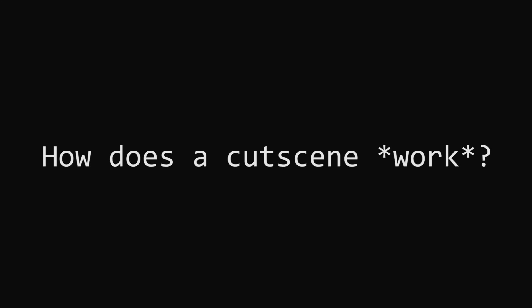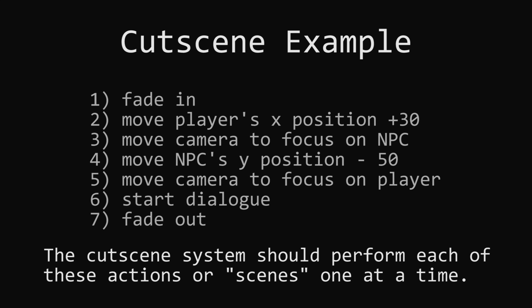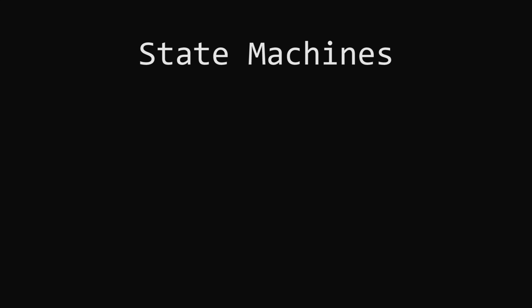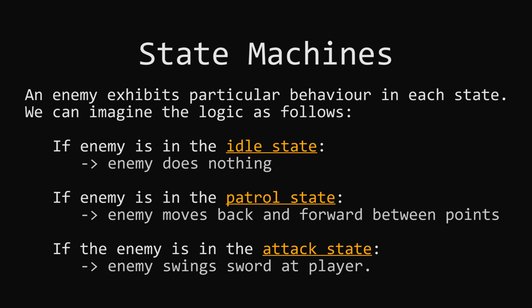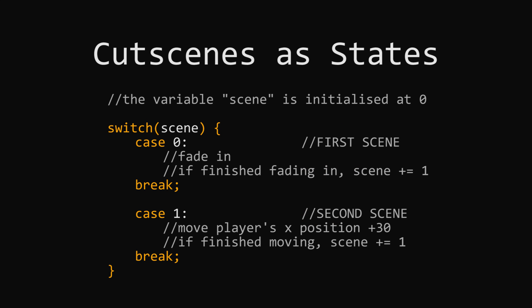We need to consider how the cutscene system is going to work. Cutscenes are a sequence of scripted events, meaning we have a bunch of actions we want to perform in a set order. We want to start at the first action and work our way down, performing each until they're finished. We can think of cutscenes like state machines for object states — just like an enemy object can be in states like idle, patrolling, and attacking, we can have our cutscenes performing in a similar way, though instead of states we might call them scenes. We could set up our cutscene like a large switch statement.